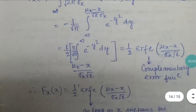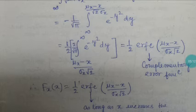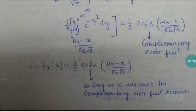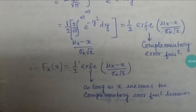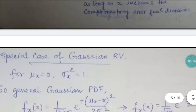The erfc function is a built-in function in MATLAB, so its predefined values can be easily used in mathematical programs. So F_x(x) = (1/2) erfc((μ_x - x) / (σ_x √2)). As x increases, the complementary error function decreases — it is not monotonically increasing, so this is not the standard CDF form directly.